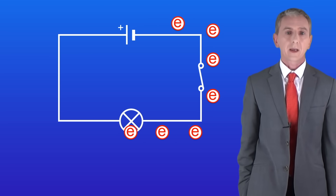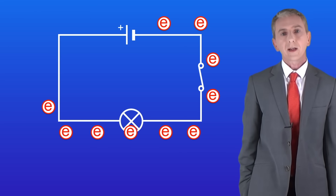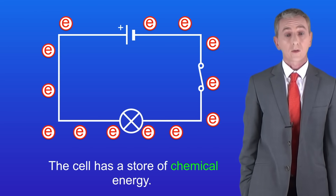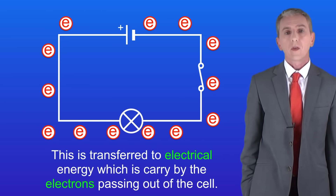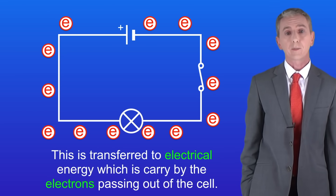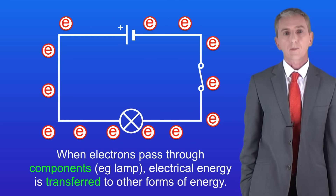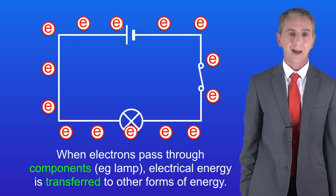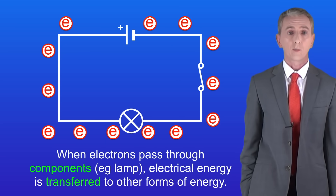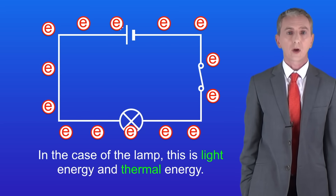The lamp lights up because the electrons are giving the lamp energy. The cell has a store of chemical energy, which is transferred to electrical energy carried by the electrons passing out of the cell. When the electrons pass through components such as the lamp, the electrical energy is then transferred to other forms — in the case of a lamp, light energy and thermal energy.